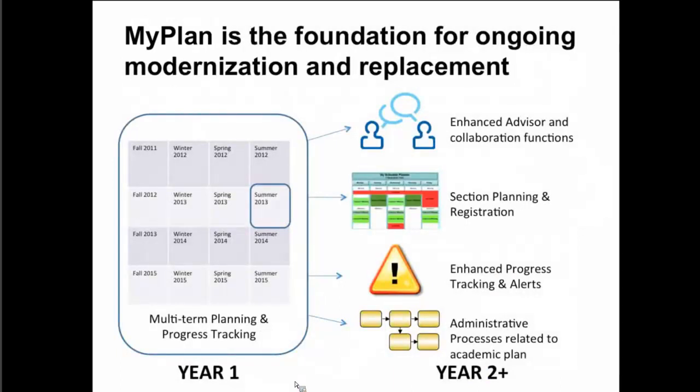Some of the most exciting conversations get started around 'my plan' as far as what we aren't doing in year one. We've got a really practical scope for this year one effort. Projecting out to year two or beyond — and maybe emphasize the beyond — some of the things highlighted were enhanced advisor and collaboration functions, something along the lines of social media. We're certainly going to be taking on basic commenting, but perhaps there are even further ways we could go with that.